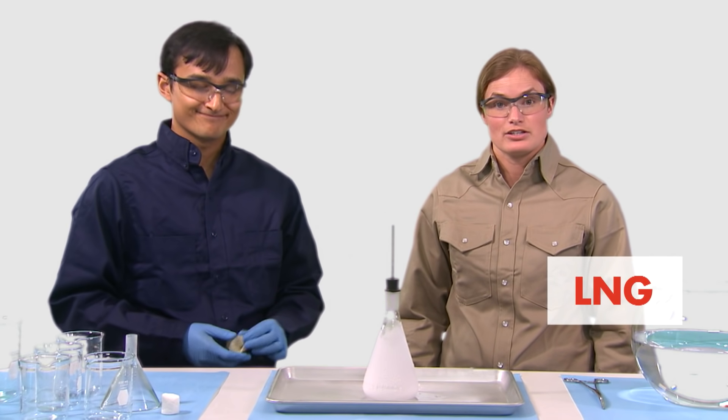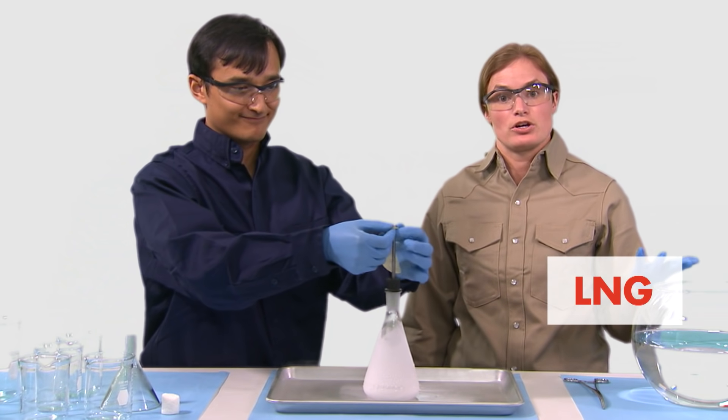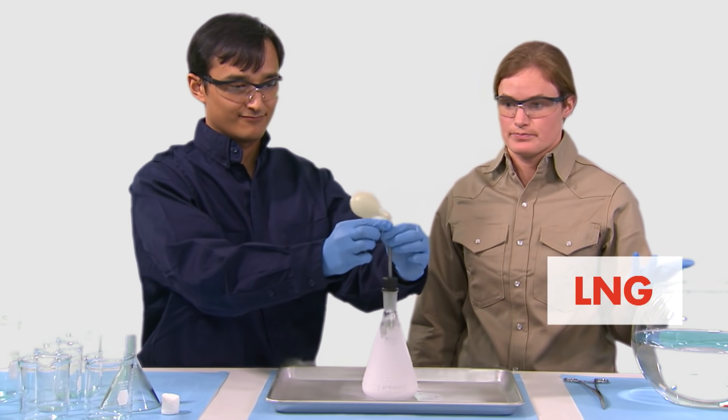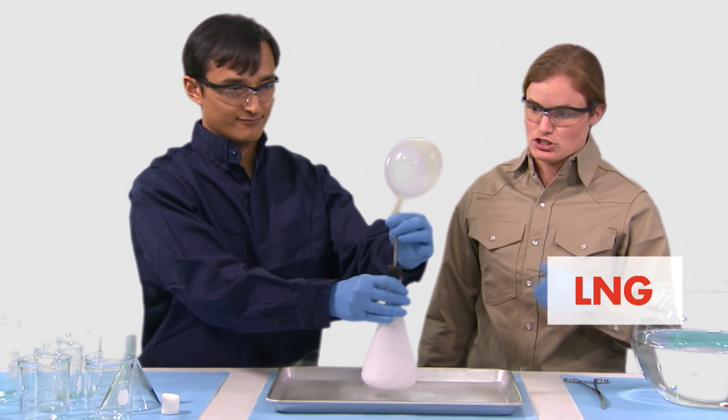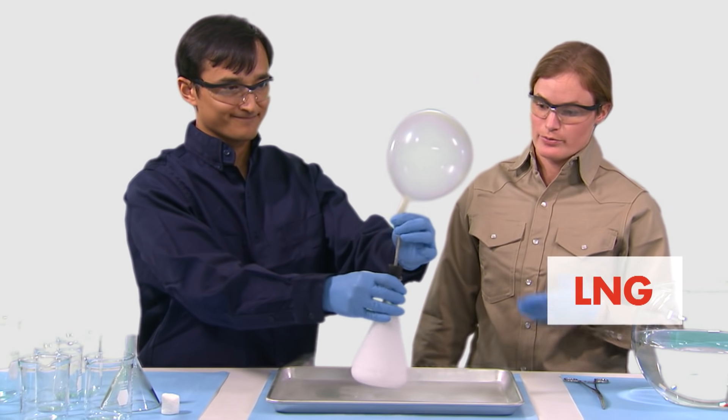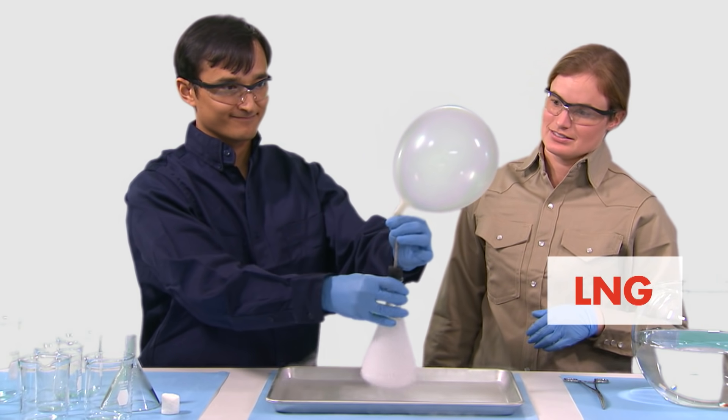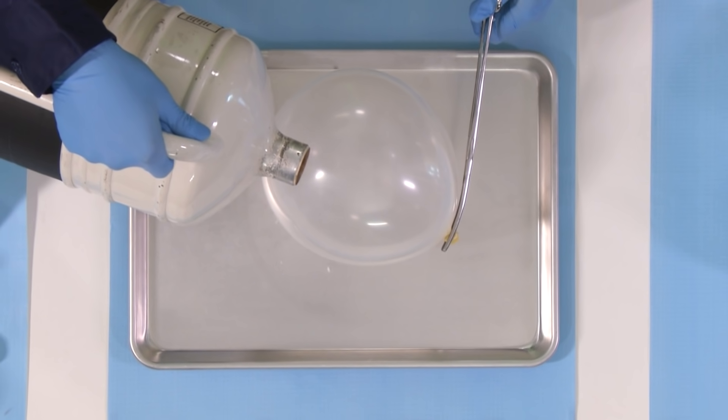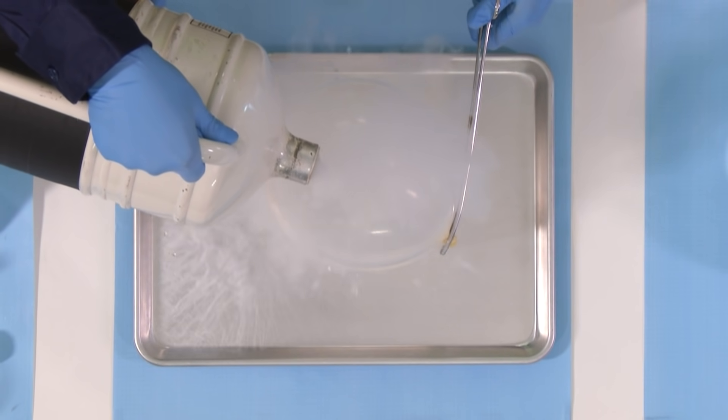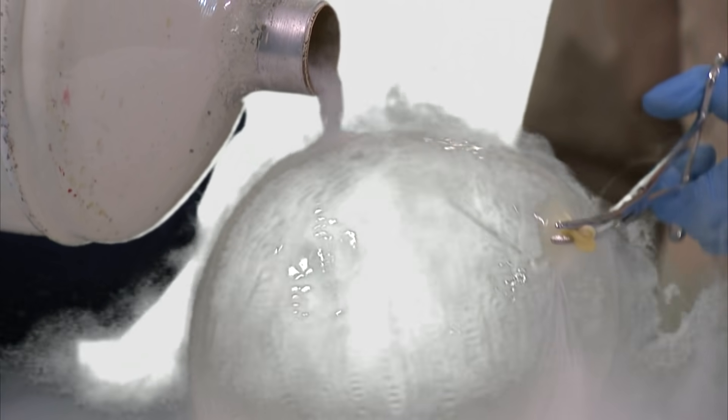We've added some LNG to this flask. When the LNG evaporates, it returns to a gas. Manine has attached a balloon to the LNG vapors coming off the LNG in the flask. Now let's convert that natural gas back into a liquid. As Manine cools the gas with LNG, you see the balloon is contracting because the gas is cooling and becoming a liquid.